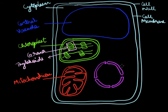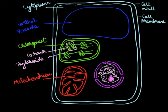Those gaps represent the nuclear pores. This is the outer membrane and this is the inner membrane. Inside the nucleus we find the nucleolus, which we represent by a shaded circle, and there is chromatin material, which is drawn as a random scribbled line. The nucleus is done.